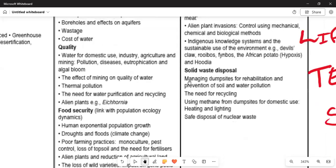Water for domestic use, industry, agriculture, and mining. Pollution, disease, eutrophication and algal bloom, the effect of mining on quality of water, thermal pollution, the need for water purification and recycling, alien plants, and food security.